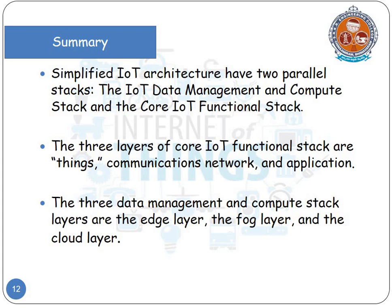In summary, the simplified IoT architecture has two parallel stacks: the IoT Data Management and Compute Stack, and the Core IoT Functional Stack. The layers of the Core IoT Functional Stack are the things layer, communication network layer, and application layer. The Data Management and Compute Stack consists of edge layer, fog layer, and cloud layer. This is the end of Unit One. Thank you.